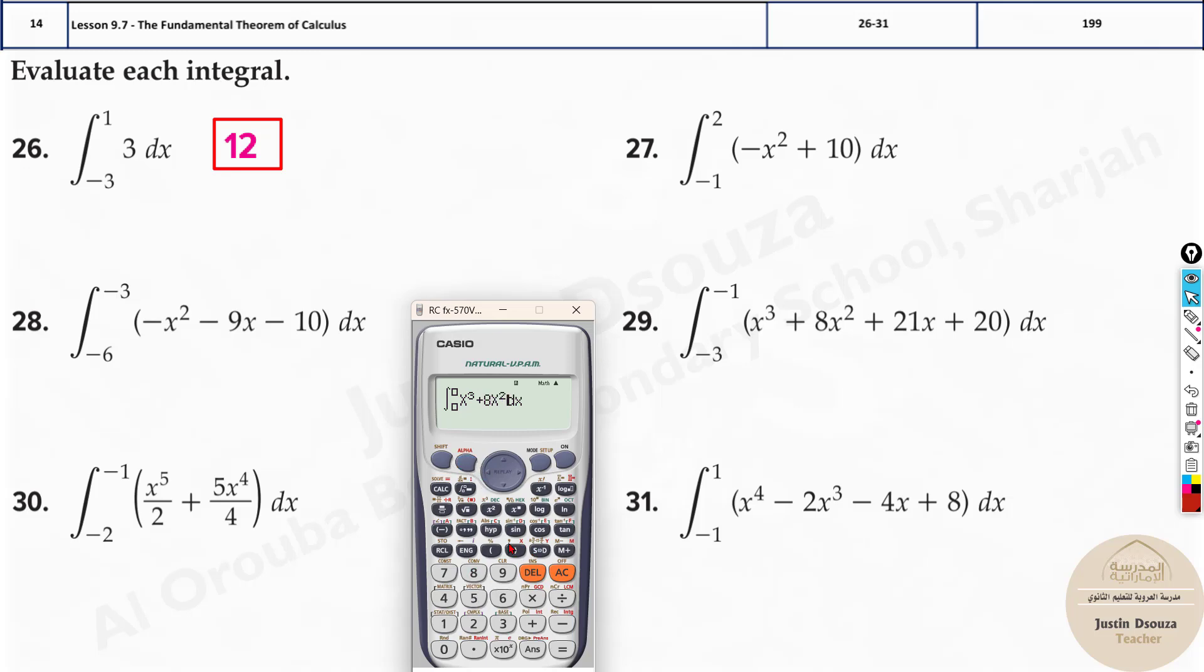It is 8x squared plus 21x plus 20. Now what you need to do is start from minus 3 to minus 1. The answer is 16 by 3, or it is 5.333.